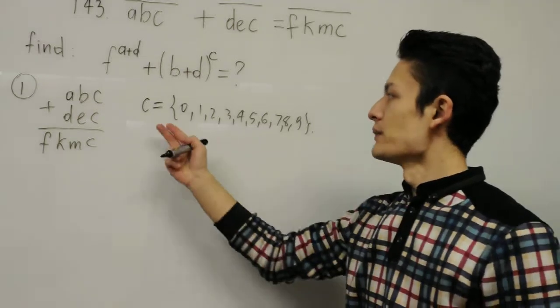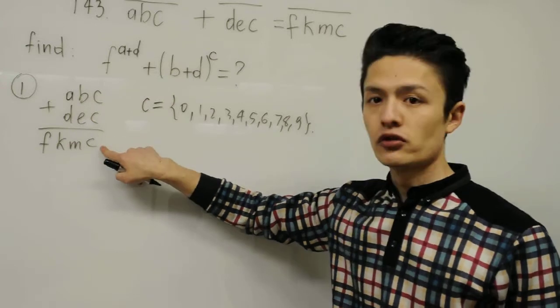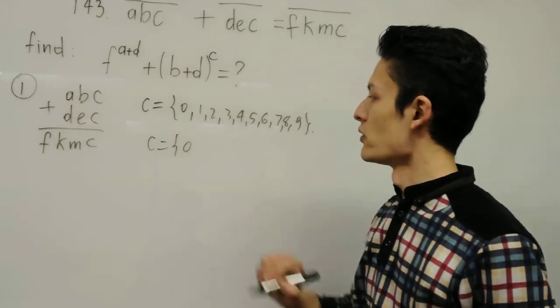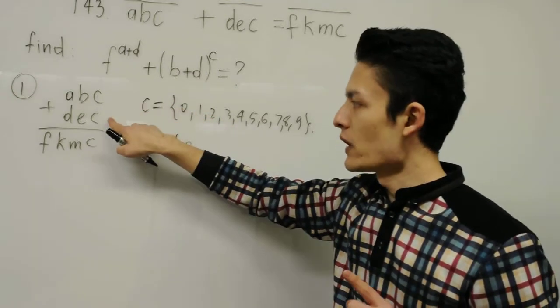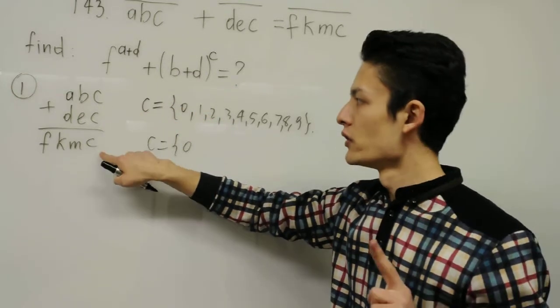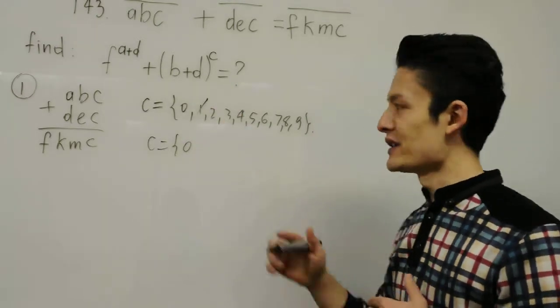And now I say C can be 0, because 0 plus 0 is equal to 0, and I write C is equal to 0. And 1, if C is 1, 1 plus 1 is equal to 2, and it is impossible. And now we're going to check the other cases too. 2 plus 2 is 4, it's impossible.